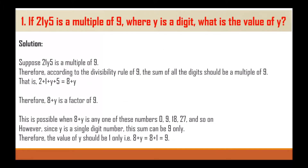Let's solve the textbook exercise. Question 1: If 21y5 is a multiple of 9, where y is a digit, what is the value of y? Suppose 21y5 is a multiple of 9. According to the divisibility rule of 9, the sum of all the digits should be a multiple of 9. That is 2 + 1 + y + 5 = 8 + y.